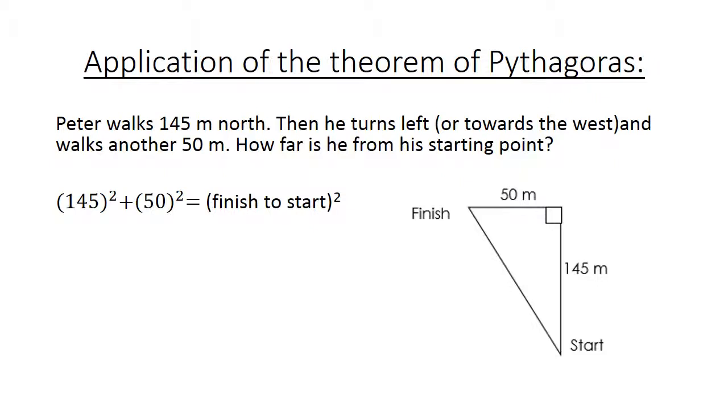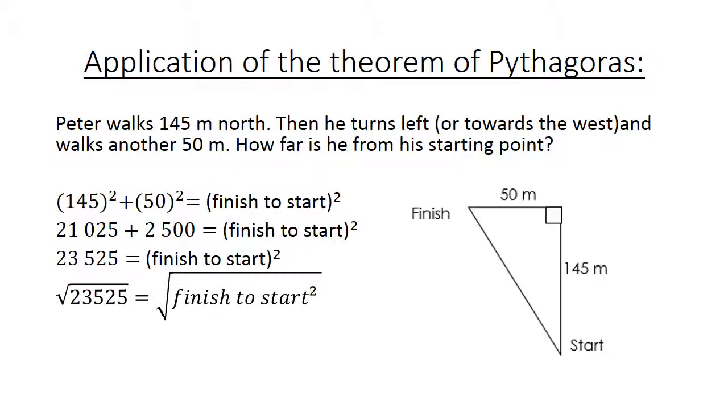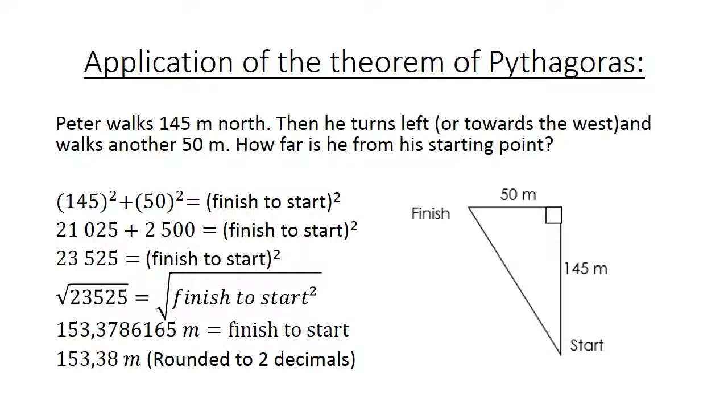We can use Pythagoras. 145 square plus 50 square equals finish to start square. 145 square is equal to 21,025. 50 square is 2,500. If we add them, 23,525. Now you have to take the square root on both sides. 153.38 meters is equal finish to start. Now we round this to 2 decimals. 153.38 meters.